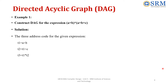We will consider the statements one by one. The first statement is t1 = a + b. Construct the leaf nodes a and b, and connect them with the operator node plus. Label this node with the LHS, that is t1.